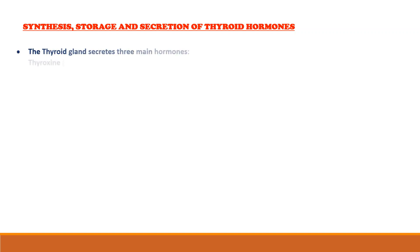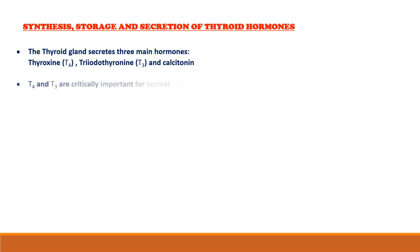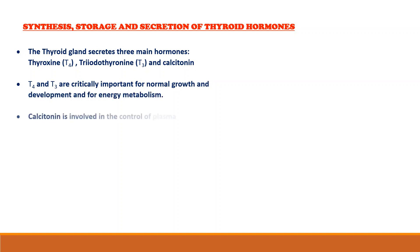Thyroid glands secrete three main hormones: thyroxine, triiodothyronine, and calcitonin. Of these, T4 and T3 are important for normal growth and development and even for energy metabolism. Calcitonin is involved in the control of plasma calcium.